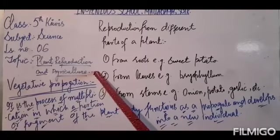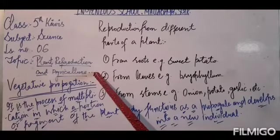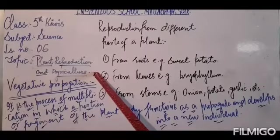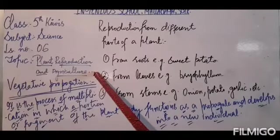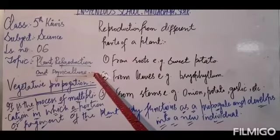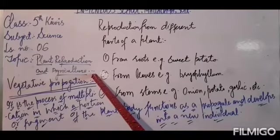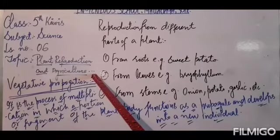As you all know, when a seed is sown into the soil and it gets favorable climatic conditions, it grows into a new plant. We learned about those favorable conditions in the last class — a good amount of sunlight, air, and water. These are the favorable conditions which a seed needs to grow into a new plant.